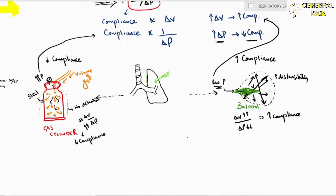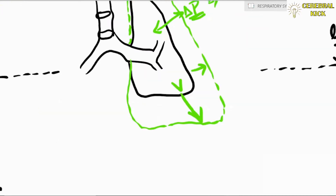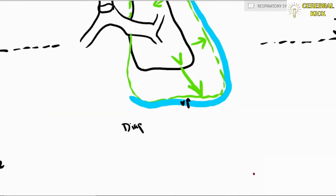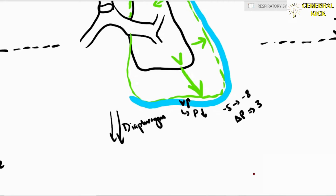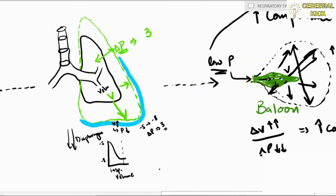Let us see how lungs behave. As a result of a pressure change, volume increases. The net change in intrapleural pressure is 3 cmH2O — when the diaphragm moves downwards, pressure reduces, giving a net pressure change of 3, which pulls on the lungs and inflates them.